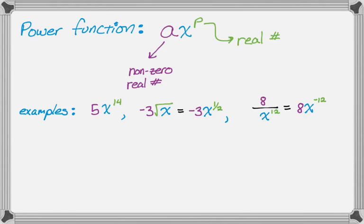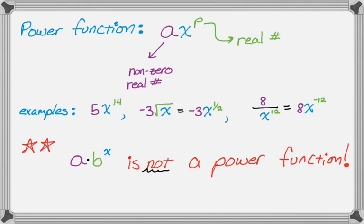There is one kind of caveat, and it's this. But a times b to the x is not a power function, so look where the variable is there. It's in the exponent. So this is not a power function, but it is an exponential function, and those have their own set of rules. So you don't want to worry about those right now.